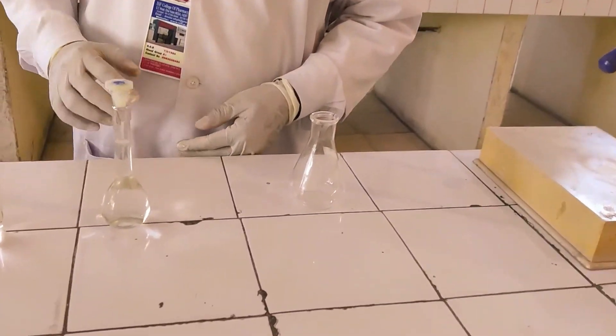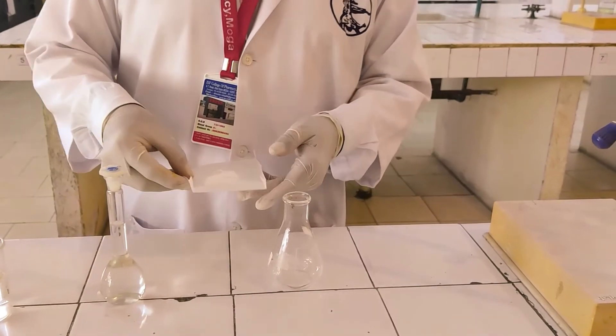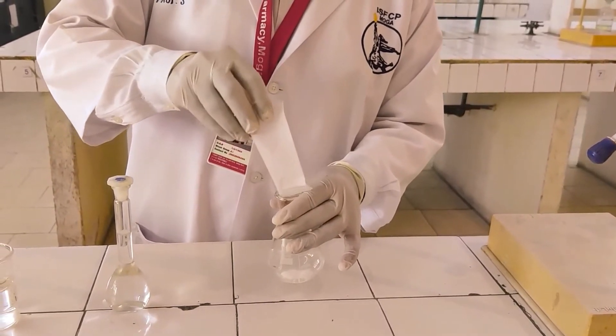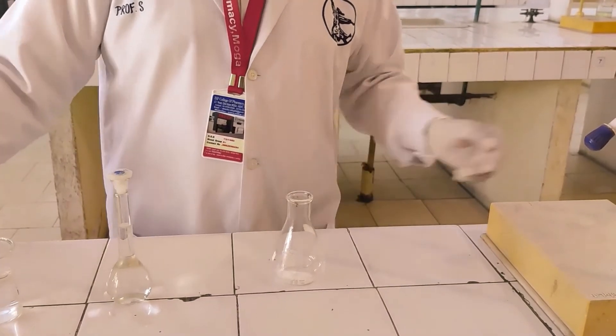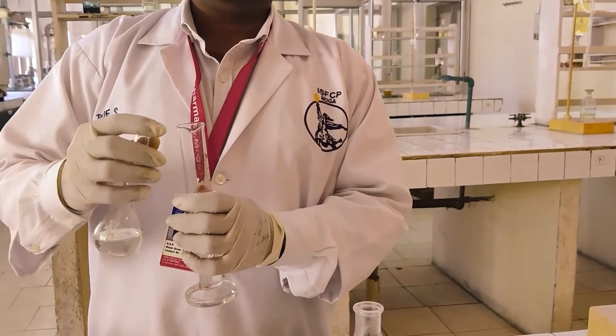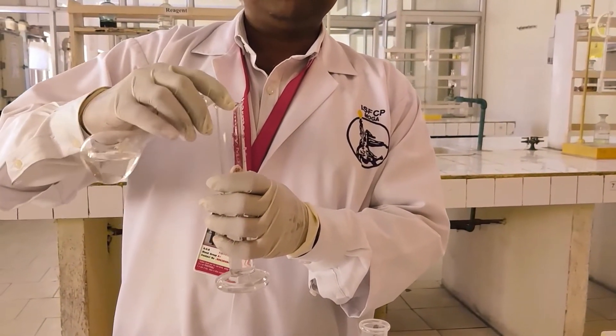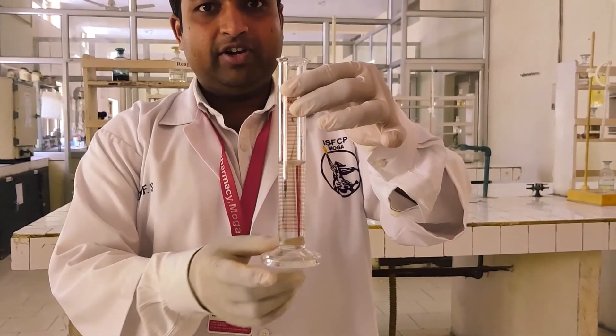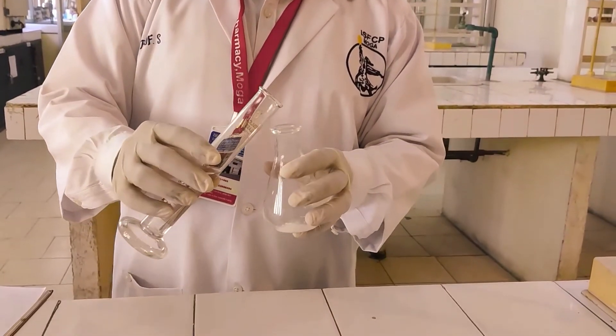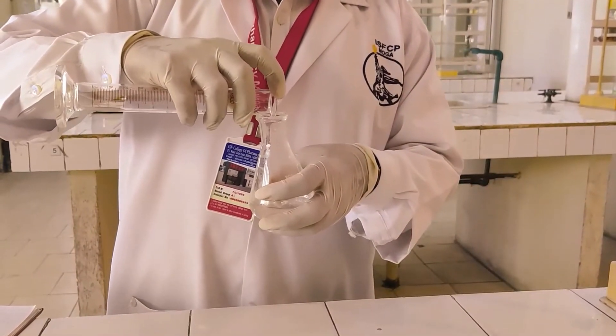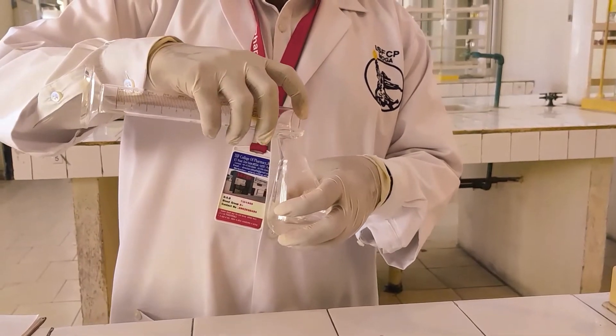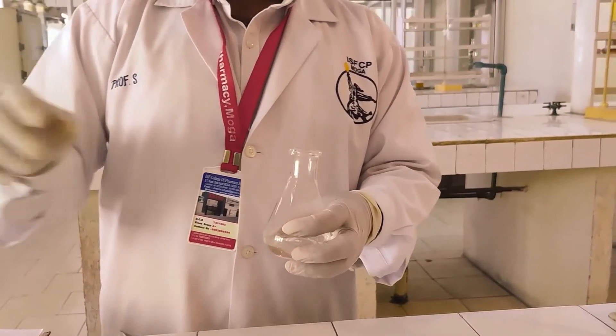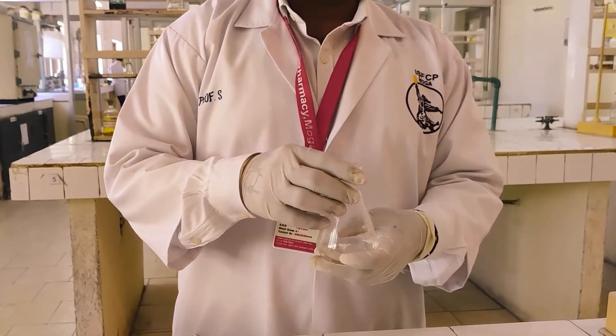Now the 0.5 molar NaOH has been prepared. In next step transfer the weighed amount of aspirin into the conical flask. Now measure the 30 ml of NaOH from previously prepared 0.5 molar NaOH in a measuring cylinder. This is 30 ml NaOH then add it into conical flask having 1.4 gram of aspirin equivalent to 0.5 gram of aspirin active content.